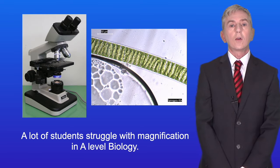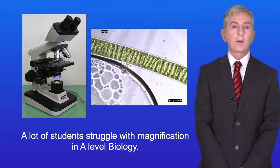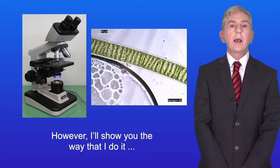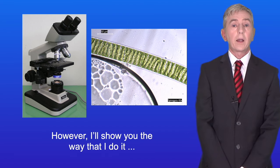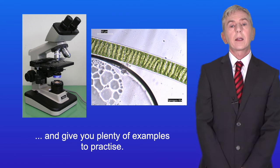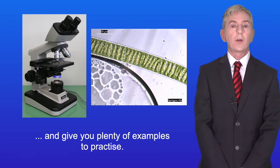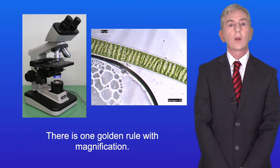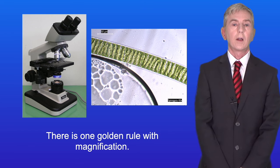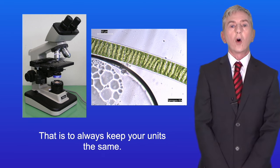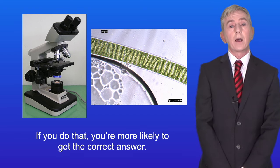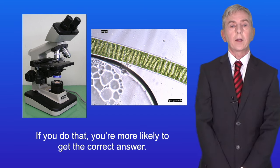A lot of students struggle with magnification in A-level biology. However, I'll show you the way that I do it and give you plenty of examples to practice. There is one golden rule with magnification: always keep your units the same. If you do that you're more likely to get the correct answer.